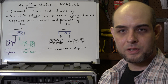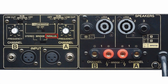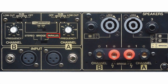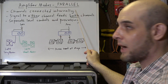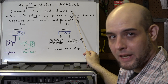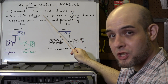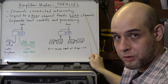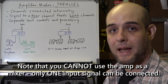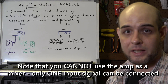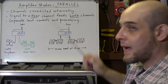Now let's move on to the second main type of power amplifier mode: parallel. The difference between stereo and parallel is that the two amplifier channels are connected internally — a signal to either channel feeds both channels. Whatever you send to channel one feeds both channels one and two, and vice versa.